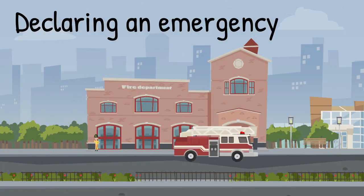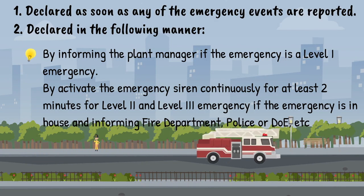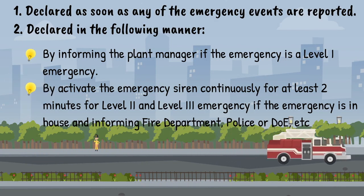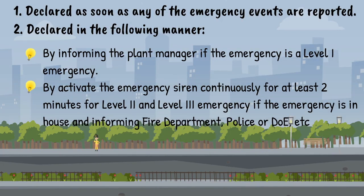To declare an emergency, the declaration is made as soon as any emergency situation is reported. For a Level 1 emergency, inform the plant manager. For Level 2 and Level 3 emergencies, activate the emergency siren continuously for at least two minutes, and if the emergency is in-house, inform the fire department, police, and other relevant departments.